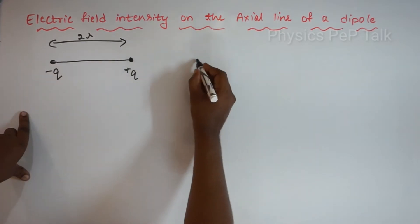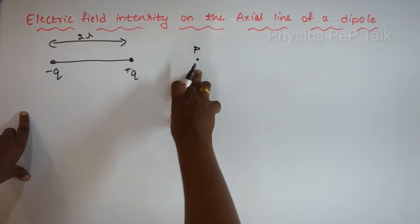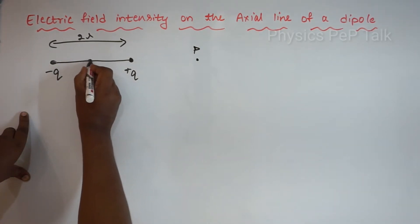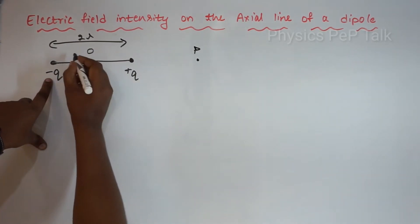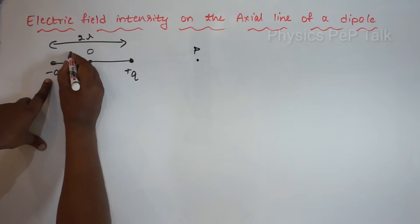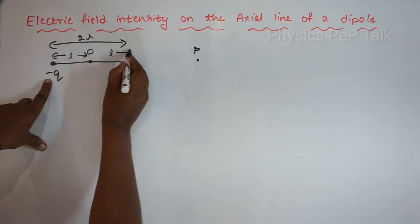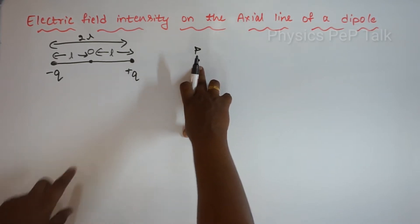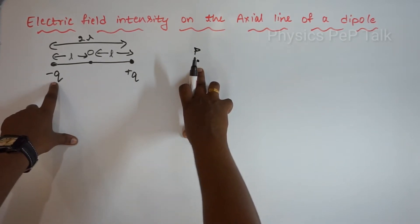I will consider a point P where a unit positive test charge will be placed. I will consider a point O on the axis of the dipole such that O will be the midpoint of the dipole. The distance between minus Q and point O will be L, and the distance between plus Q and O will also be L. The electric field intensity at this point is the algebraic sum of the electric field intensity due to plus Q and due to minus Q.